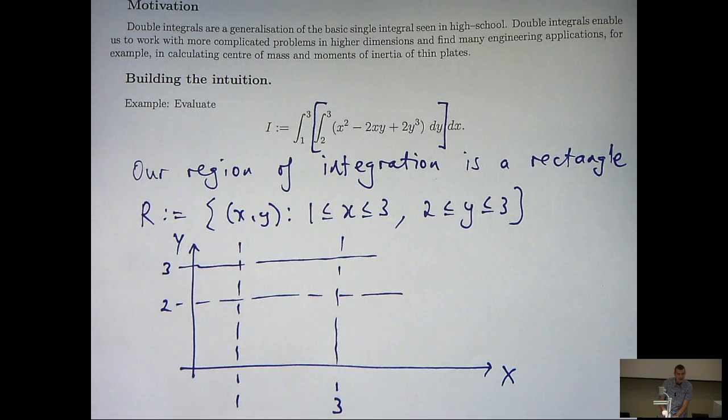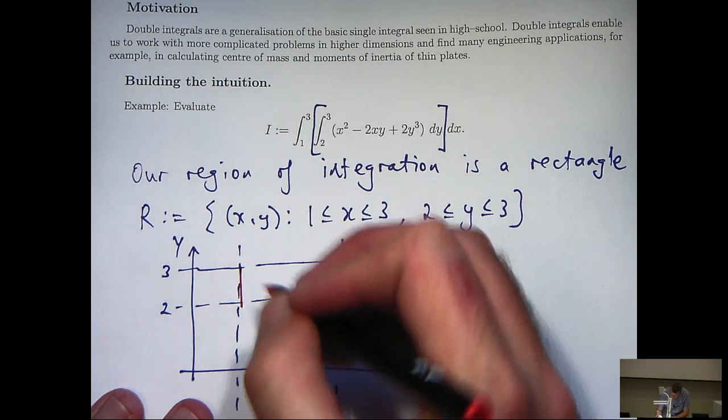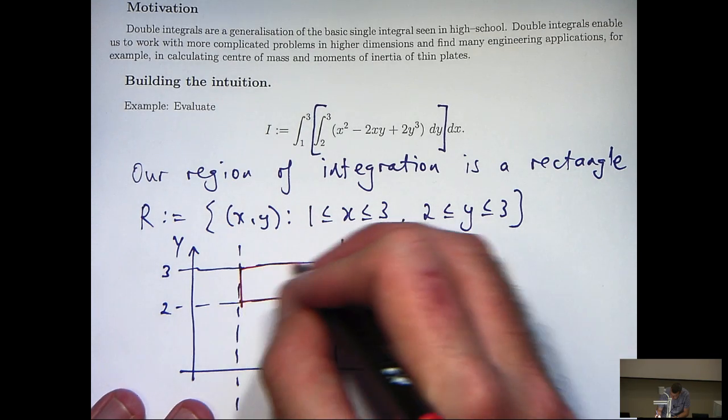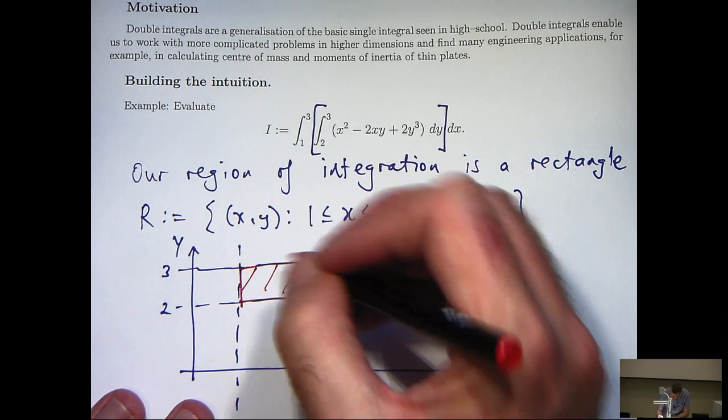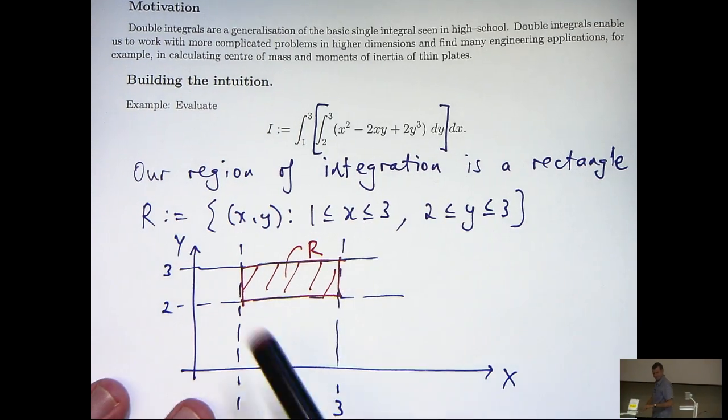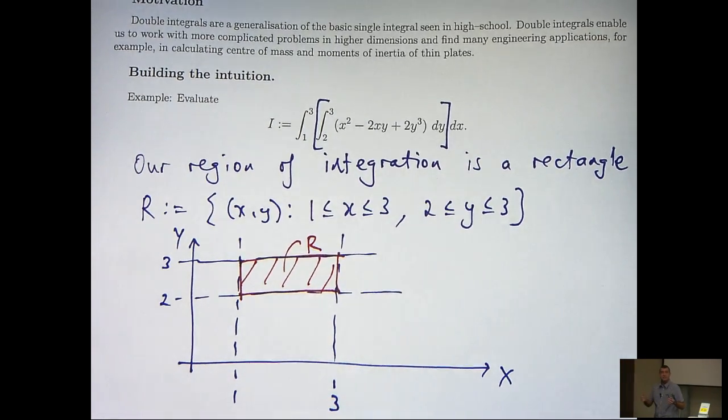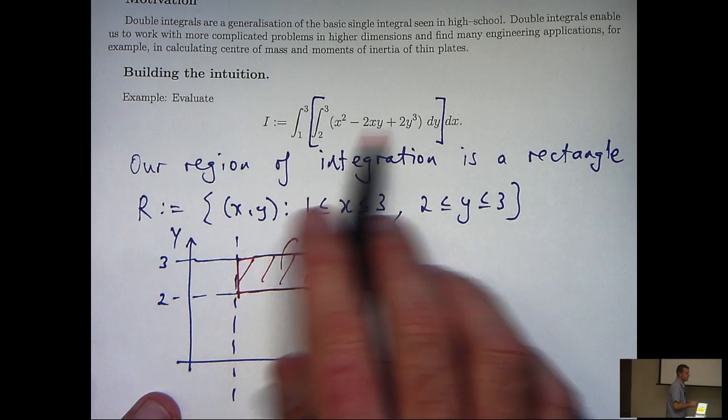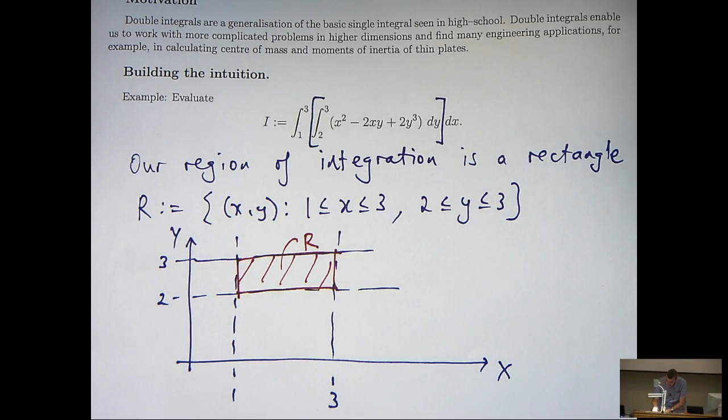And you can see those four lines bound or enclose, in this case, a rectangular region. So this shaded area is our rectangular region that we're integrating this function over.